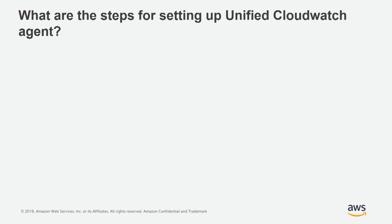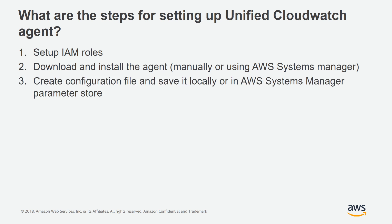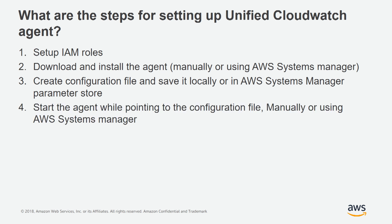What are the steps for setting up Unified CloudWatch Agent? First, we need to create IAM roles. Second, we need to download and install the agent on the instance — this can be done manually or using AWS Systems Manager. Third, we need to create a configuration file, which can be done manually or using the CloudWatch Agent configuration wizard, and store it either locally or in AWS Systems Manager Parameter Store. Fourth, we need to start the agent while pointing it to the configuration file. In this demo, we are going to use AWS Systems Manager for installing the agent, storing the configuration file, and starting the agent.